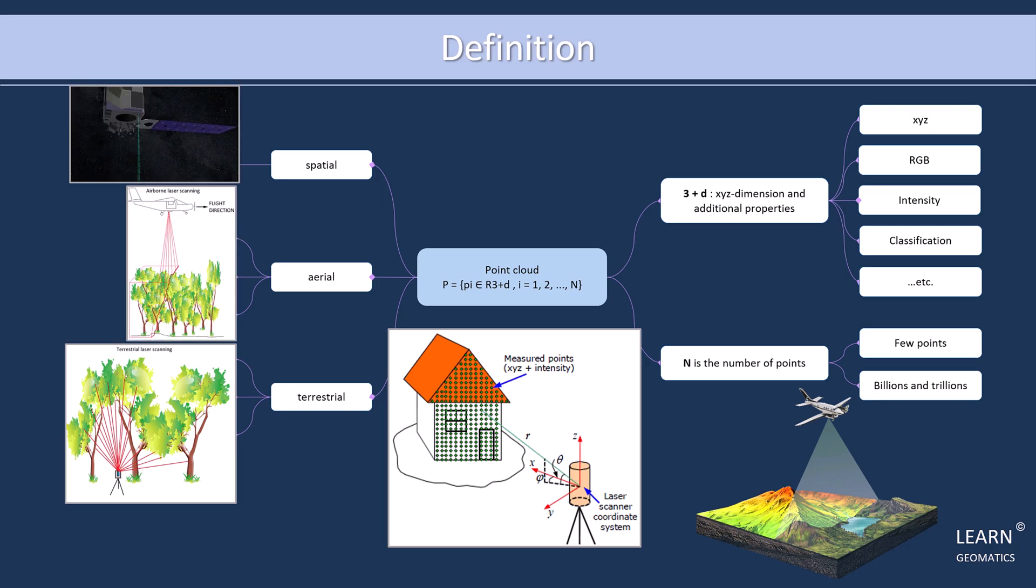On the other hand, spatial sensors mounted on satellites provide a unique perspective for acquiring point clouds over large areas, such as entire cities or even entire countries.